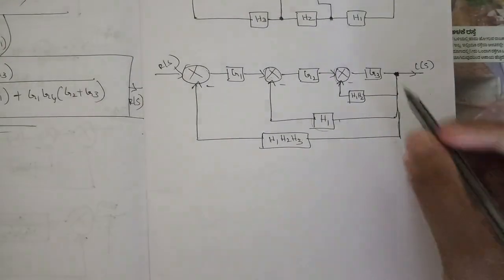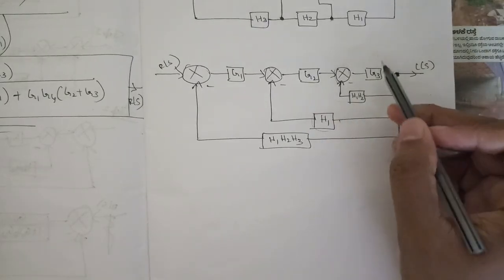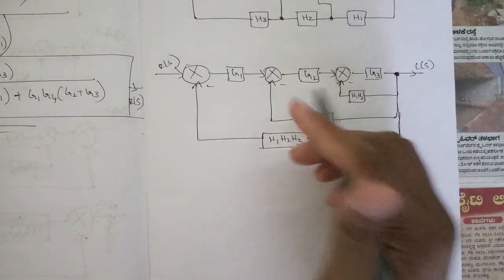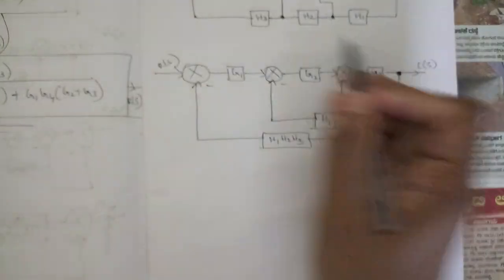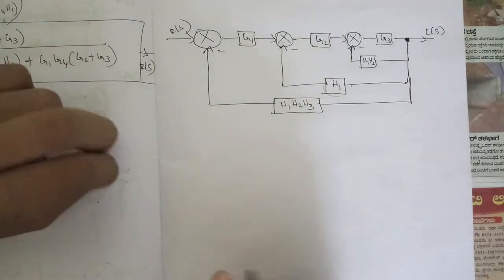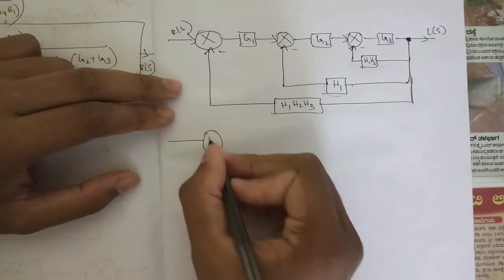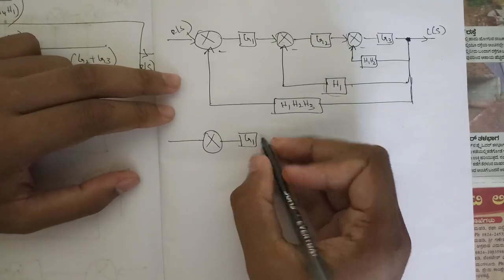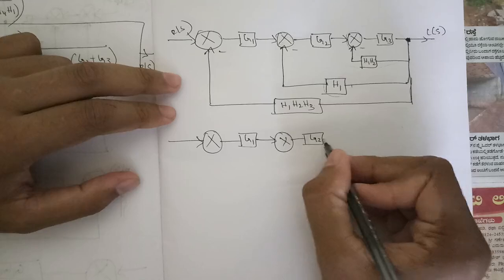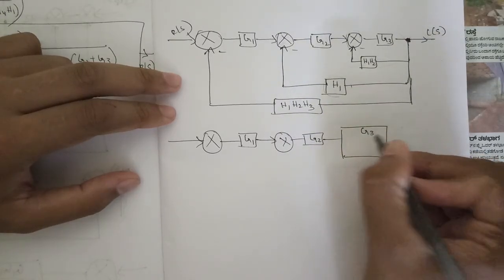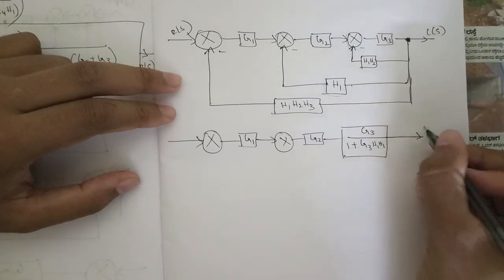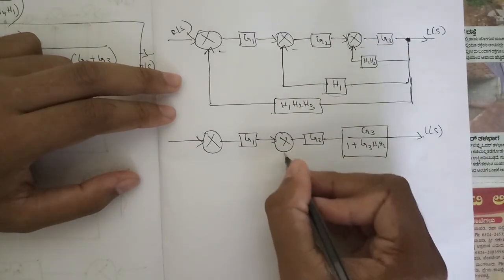Now the reduction process — we have solved many problems so you know the approach. Here we have a minor loop. Reduce this minor loop, then we'll get two blocks in series — multiply them. We'll get another minor loop, reduce that, get two more in series, multiply them, and we'll get a final minor loop. So: G1 remains as is, the summing point remains, G2 remains, and here is a minor loop.